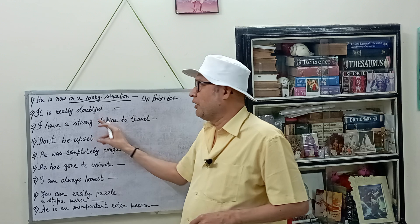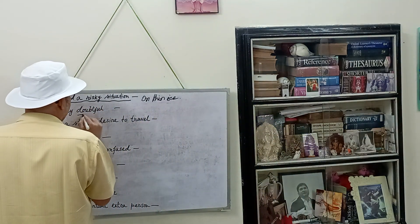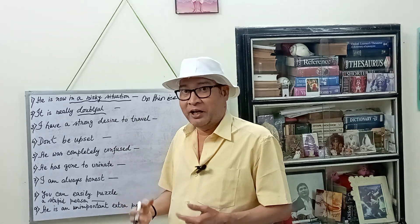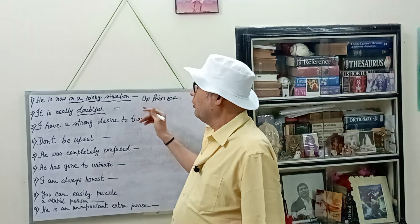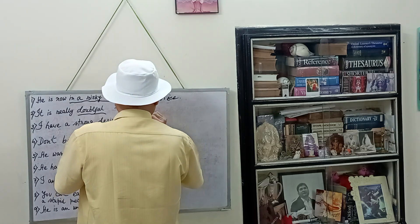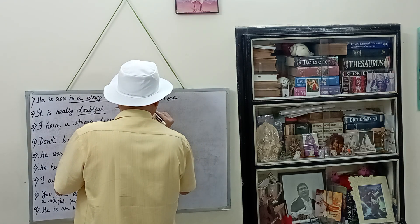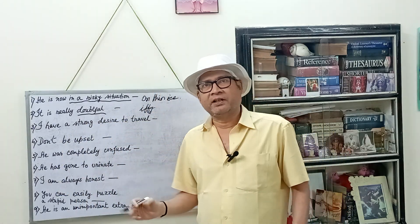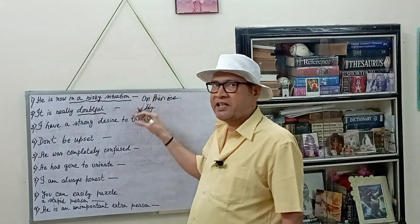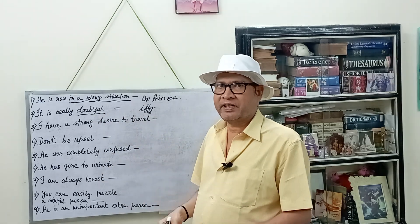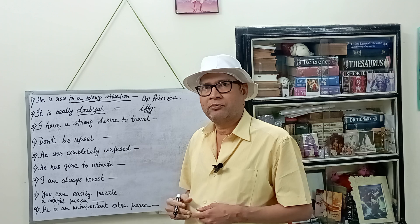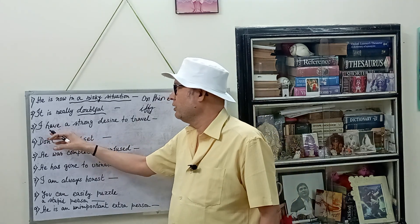The second one is: it is really doubtful. 'Doubtful' is a very, very formal word — there is no doubt about that. But what is the informal word you can use when talking to your friends? The word is very simple — you know it. It is 'iffy': I-F-F-Y. Everyone knows the word 'if,' and 'iffy' is the adjective form of that. Iffy means doubtful. If something is doubtful, you may say, 'Oh, that's iffy.' For example: 'I have seen the result, but the result is iffy.' Iffy means doubtful.